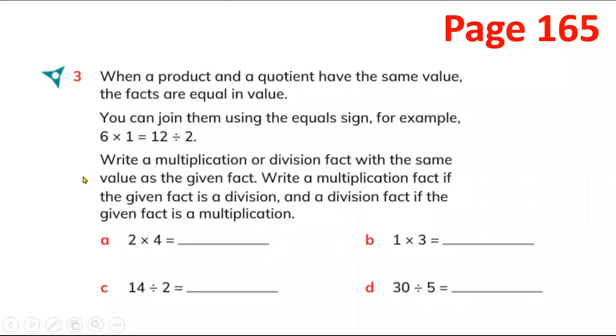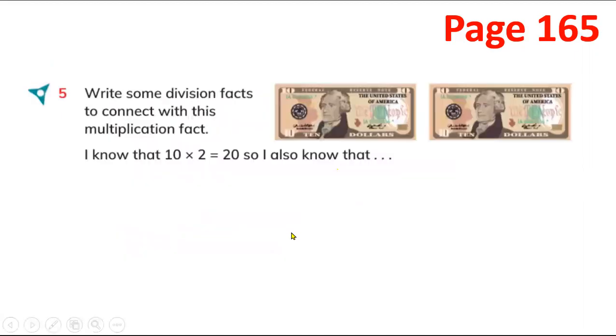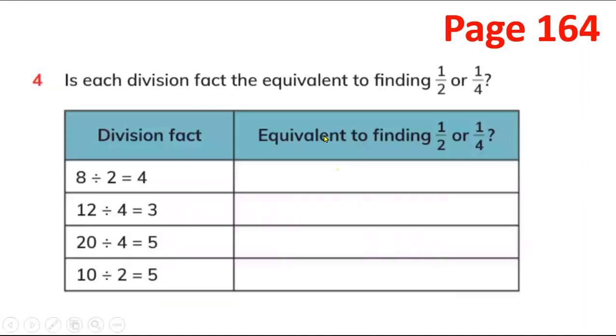Here we got question number 3. What is 2 multiply 4? That is 8. 1 multiply 3 is 3. Now 14 divide by 2, if you make 14 parts and divide into 2 you're gonna get 7.